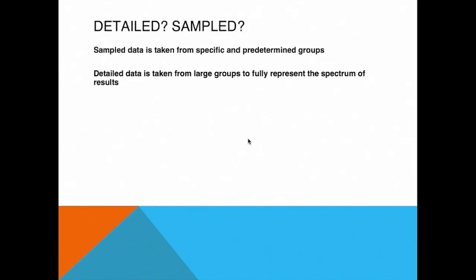Now if the data is detailed we'll be taking data from all the children male or female. Even if we only need data from the males we'll still have data that represents the full gamut or the full spectrum, the full range of everything that we've collected.